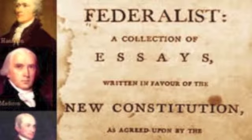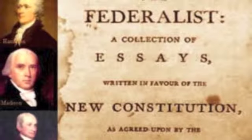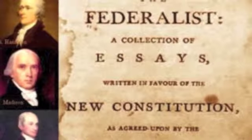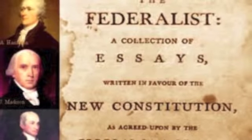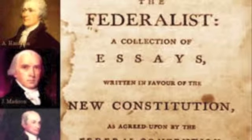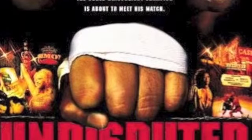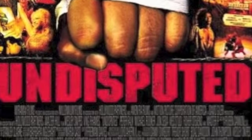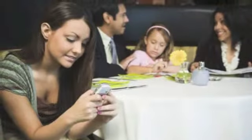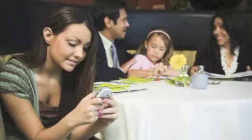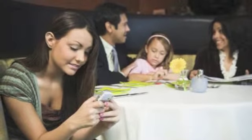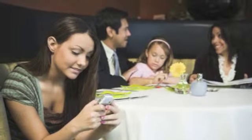A total of 85 of these essays were published and are known as the Federalist Papers. The essays were written by three men: James Madison, Alexander Hamilton, and John Jay. The papers were the undisputed subjects of discussion of the time — people would have conversations during dinner and at parties about the documents.